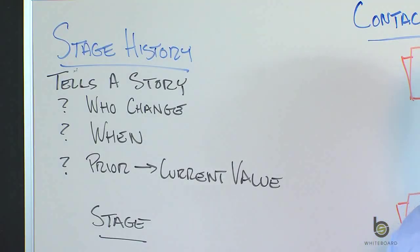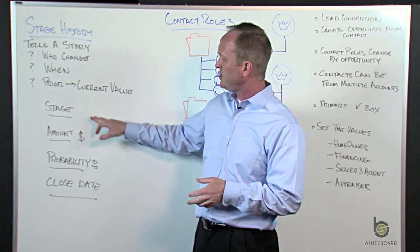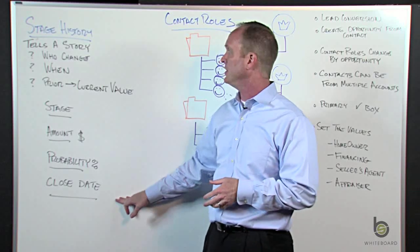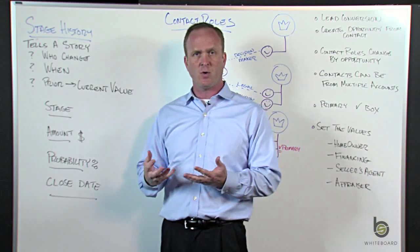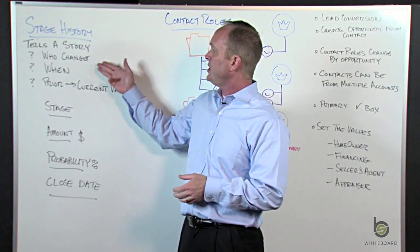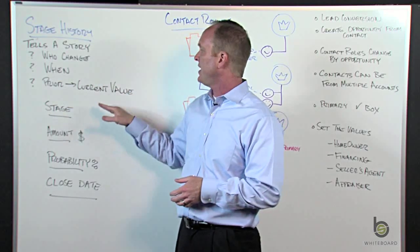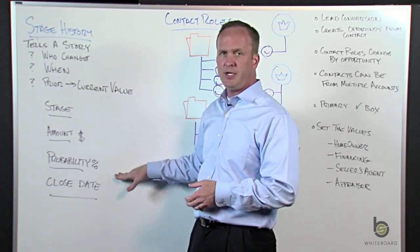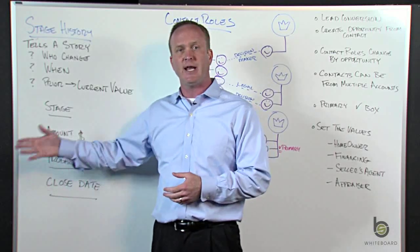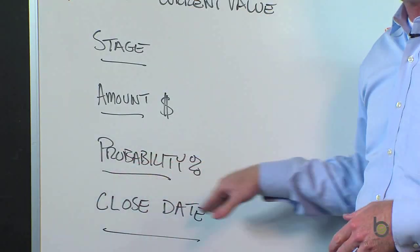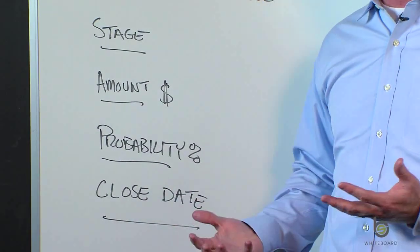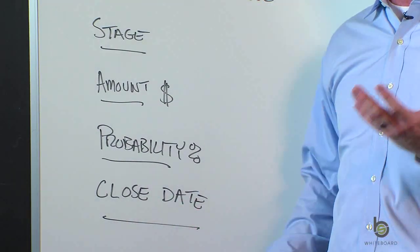Stage history is pretty unique because it is actually going to track when something changes on either the stage, amount, probability, or the close date field. And that really starts to tell a story when you're looking at an opportunity. You want to know who changed it, when, what was the prior value, and what's the current value. Did the amount go up? Did the probability go down? Are we continuing to push the close date out? As you look at all these changes in this related list, it really does tell you a little bit about the history and the story behind that.